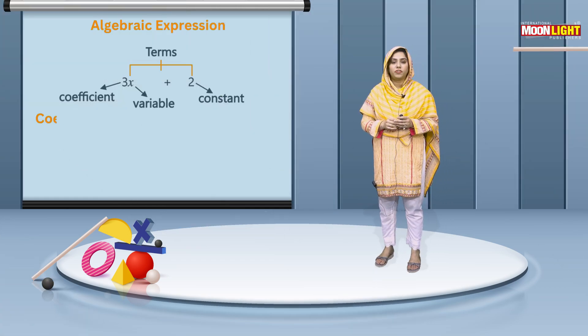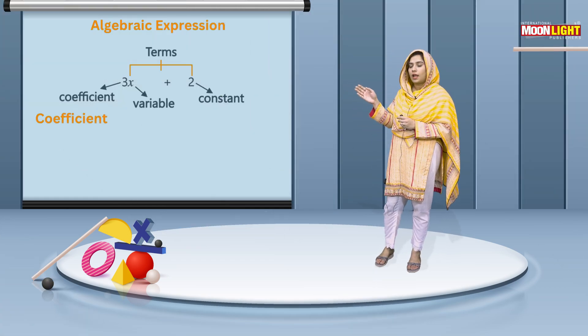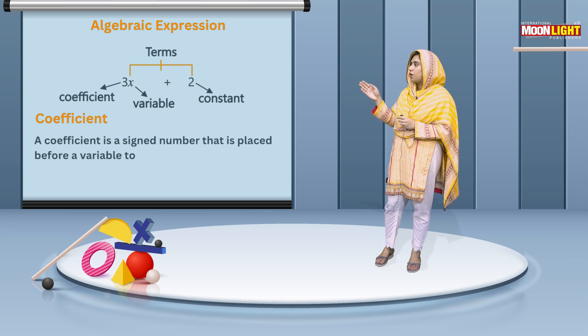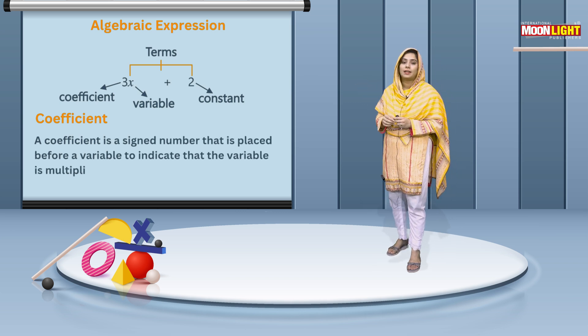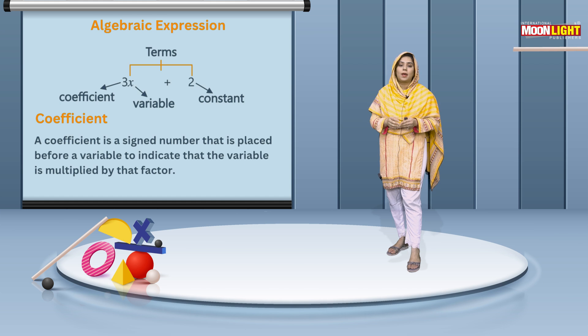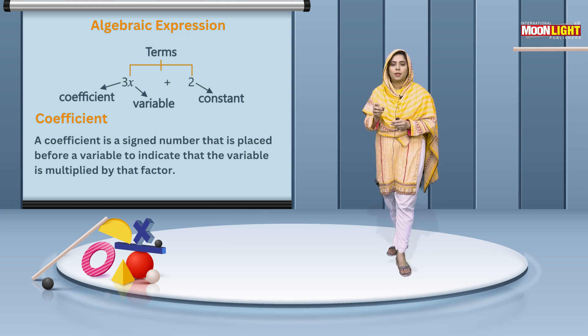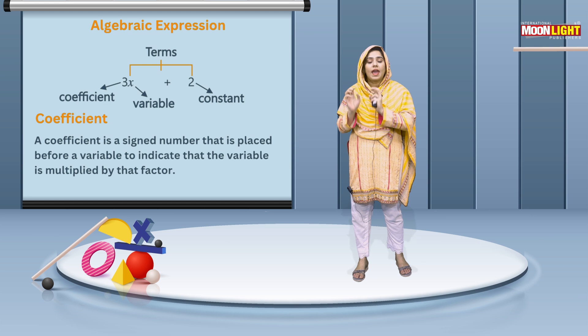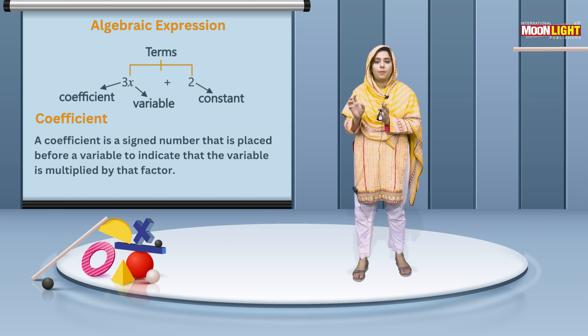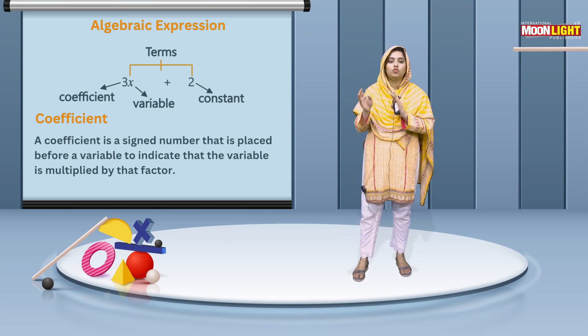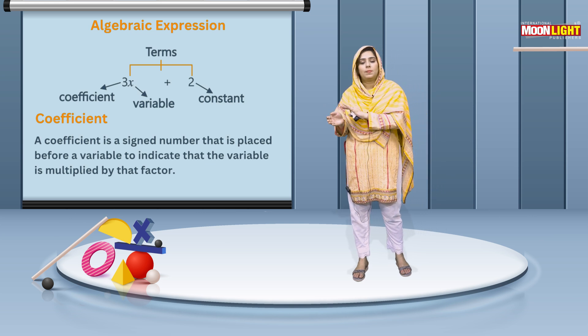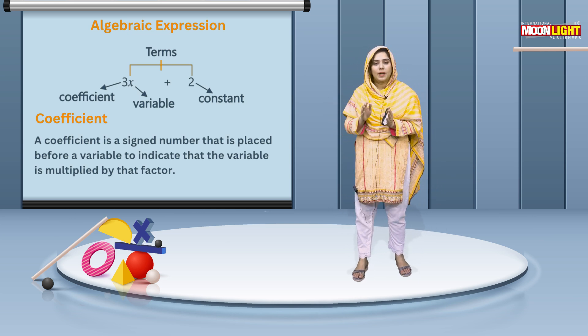Students, if I talk about coefficient definition, a coefficient is a signed number that is placed before a variable that indicates that a variable is multiplied by that factor. This means that the term is 3x where 3 is the coefficient.